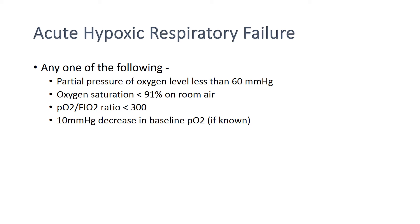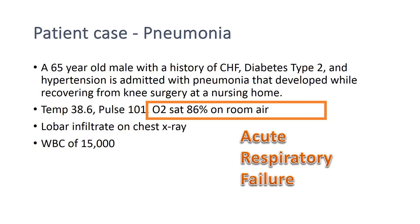The patient also has acute hypoxic respiratory failure because they meet any one of the following criteria: a partial pressure of oxygen less than 60, an oxygen saturation less than 91% on room air, a PO2/FiO2 ratio of less than 300, or a 10 mmHg decrease from baseline PO2 if known. So, this patient also has acute respiratory failure.